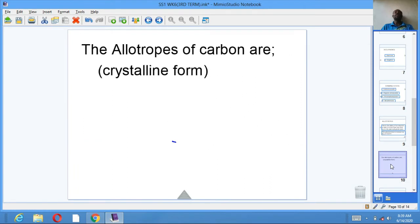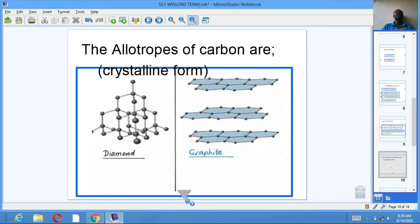The allotropes of carbon are diamond and graphite, the crystalline form. For the purpose of the exam, if you are asked to state crystalline form of carbon or the allotropes of carbon, the answer should be diamond and graphite.